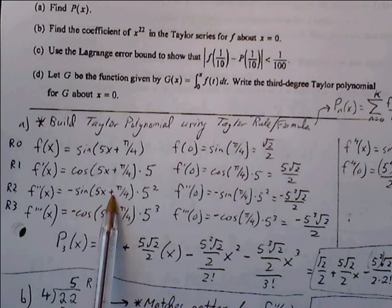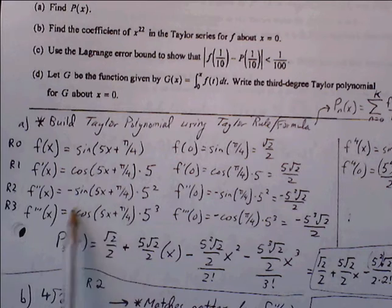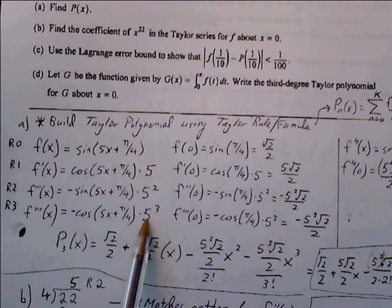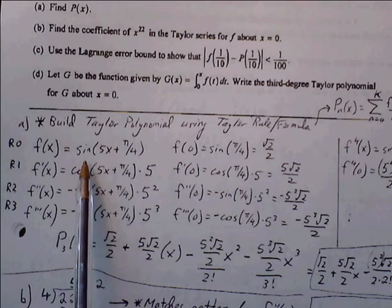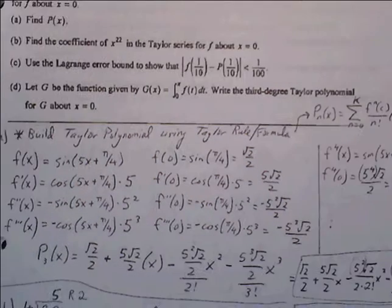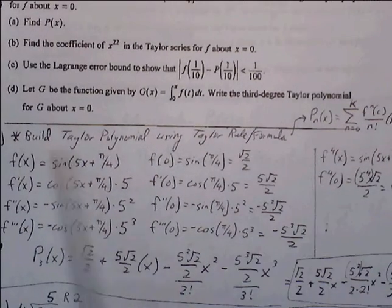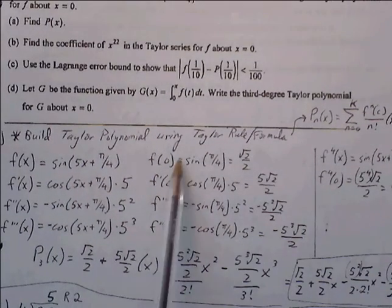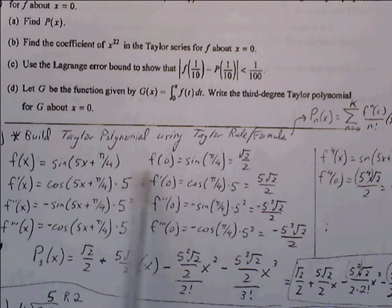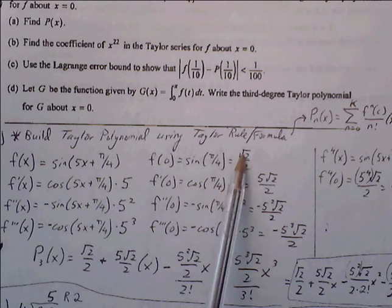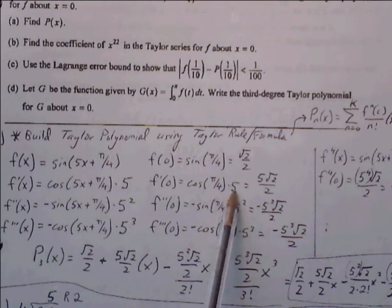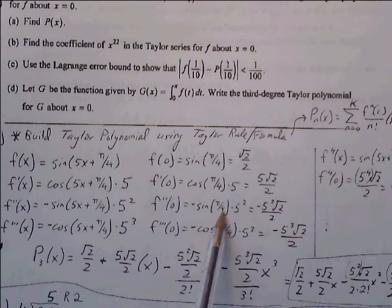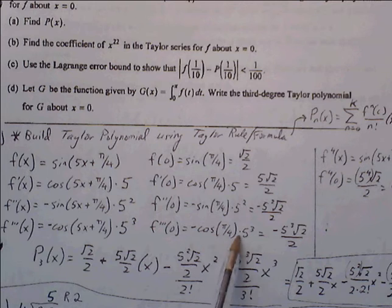The third derivative: the derivative of negative sine of u is negative cosine of u times u prime, so another factor of 5. Now we evaluate each of these derivatives at the center, x = 0. Plugging 0 in: f(0) = sin(π/4) = √2/2; f'(0) = cos(π/4)·5 = 5√2/2; f''(0) = −√2/2 · 5²; f'''(0) = −√2/2 · 5³.